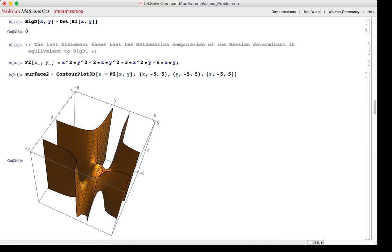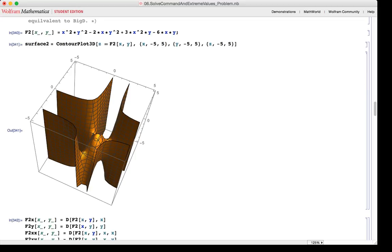Second, another function is defined. This function is x squared times y squared minus 2xy squared plus 3x squared y minus 6 times xy. This surface is then plotted via the contour 3D plot command again, and graphed with the domain of minus 5 to 5 for all x, y, and z.